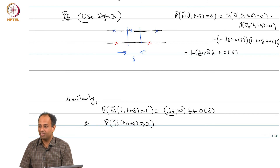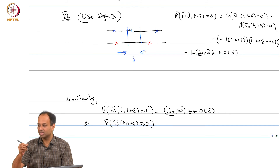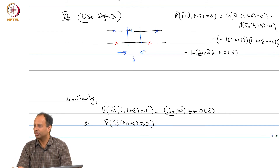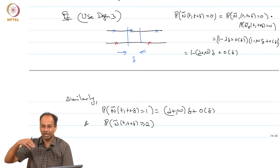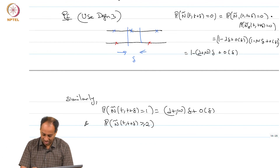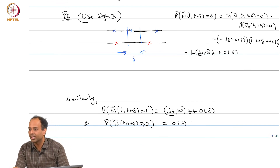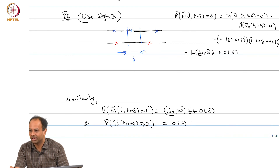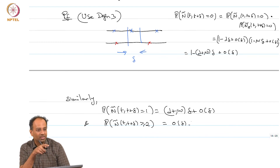For P(ñ(t, t+delta) ≥ 2), you must have at least one arrival in the first process and one in the second, which has probability lambda·mu·delta² essentially, plus there may be cases like 0 and 2 or 2 and 0, which also have little-o(delta) probability. So this can be shown to be of probability little-o(delta). This answers the question: having 2 or more arrivals in the composite merged process has probability little-o(delta).